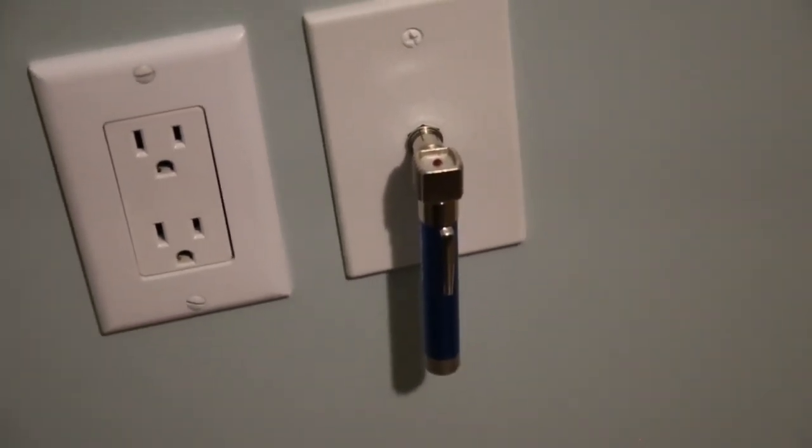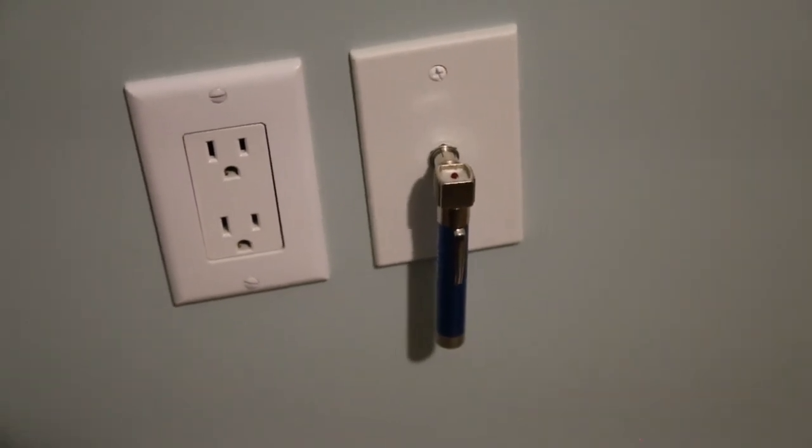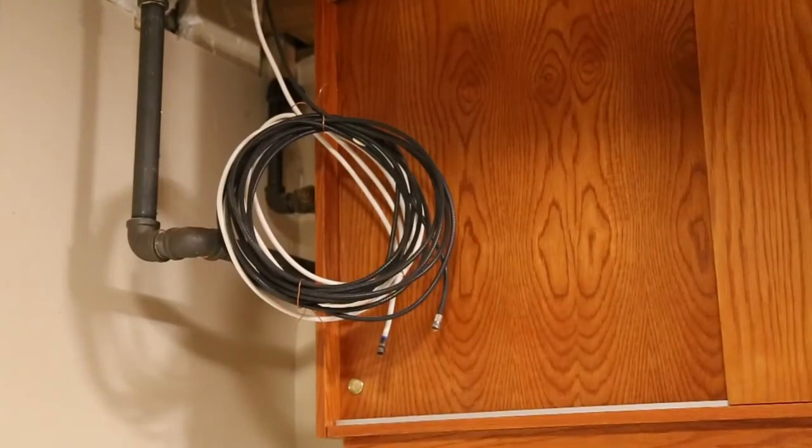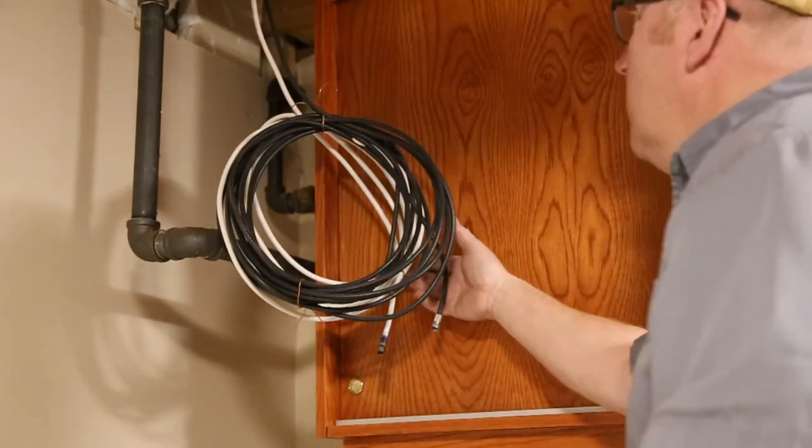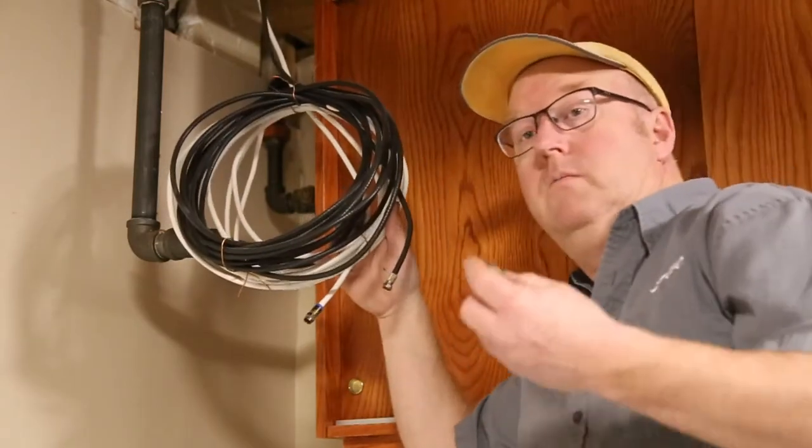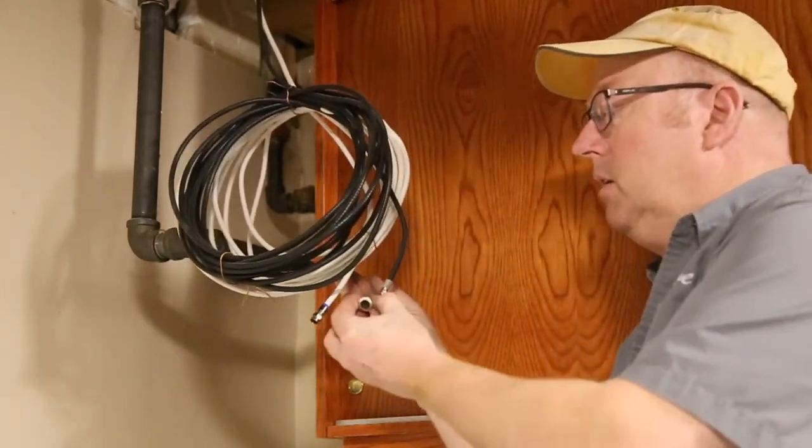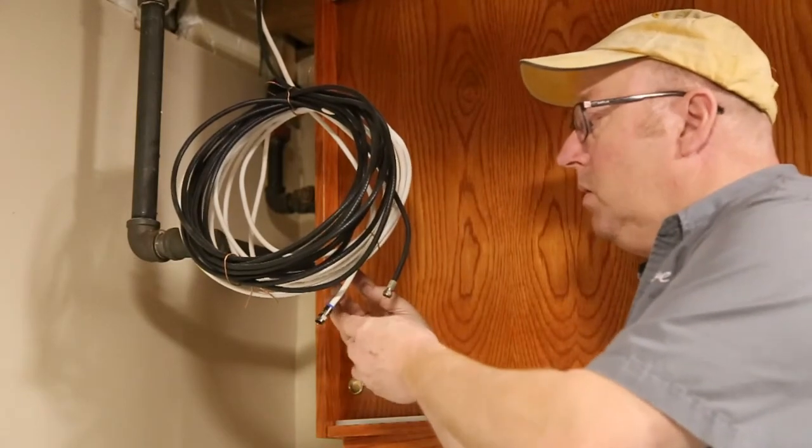We'll go downstairs and we'll hook the ringer up and figure out which wire it is. All right, we got the main part hooked up to the jack in the bedroom. Now this is the little ringer part here.